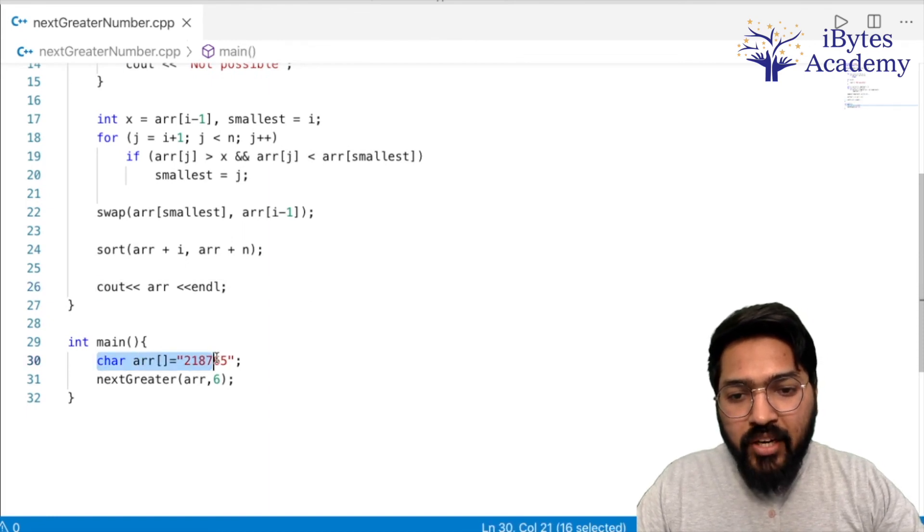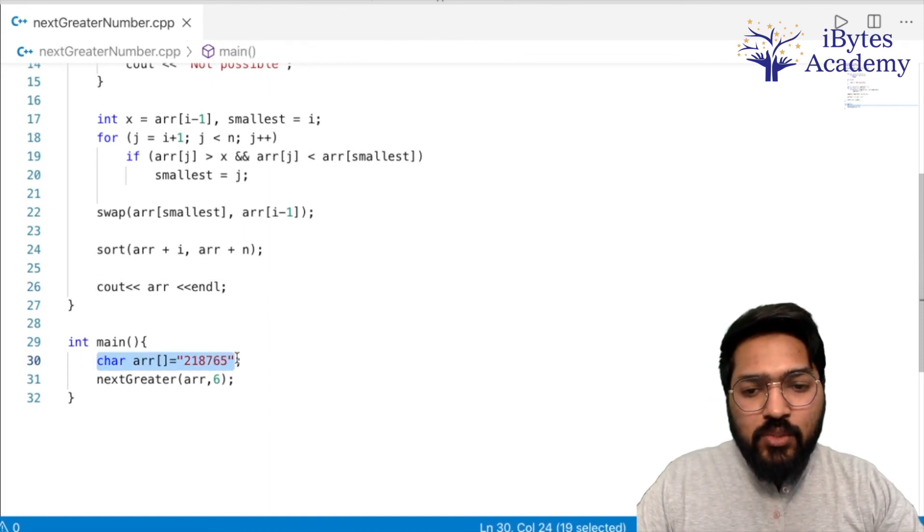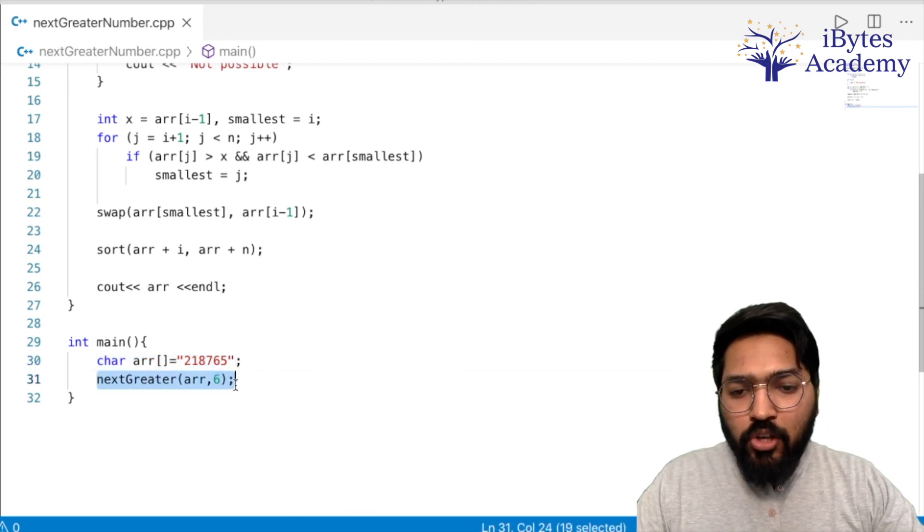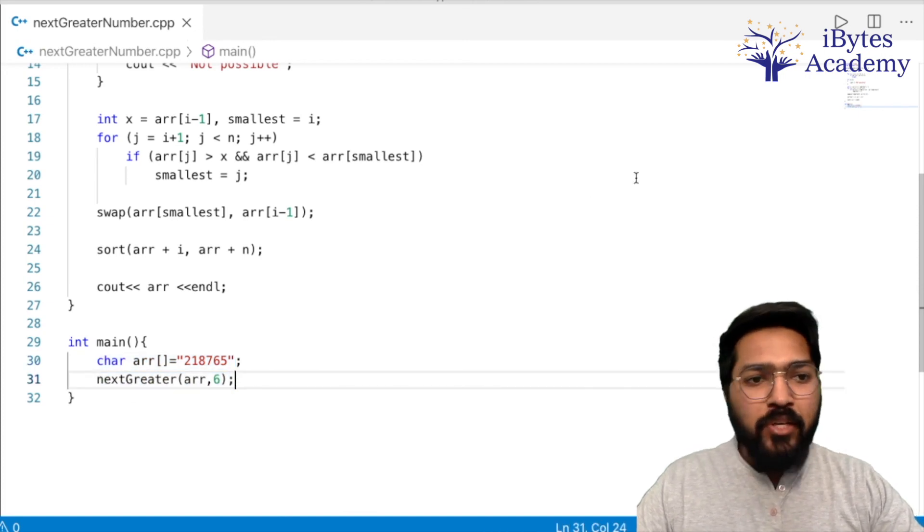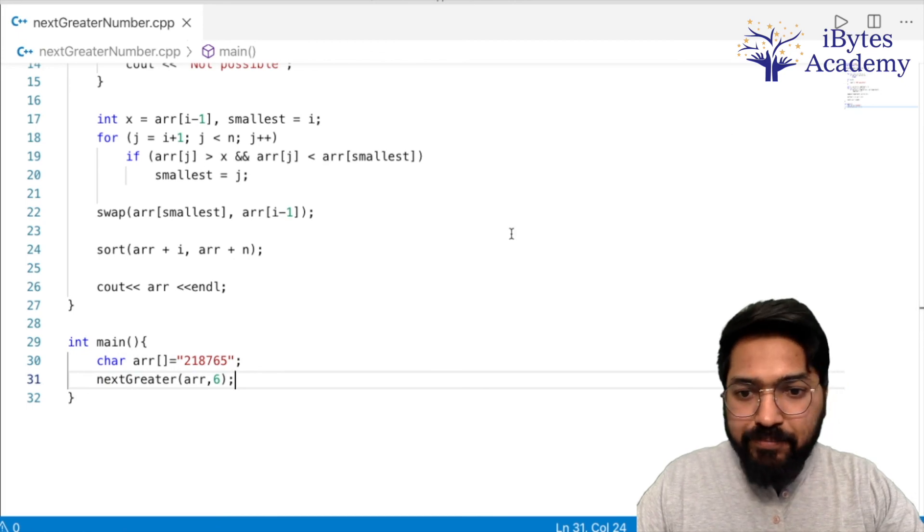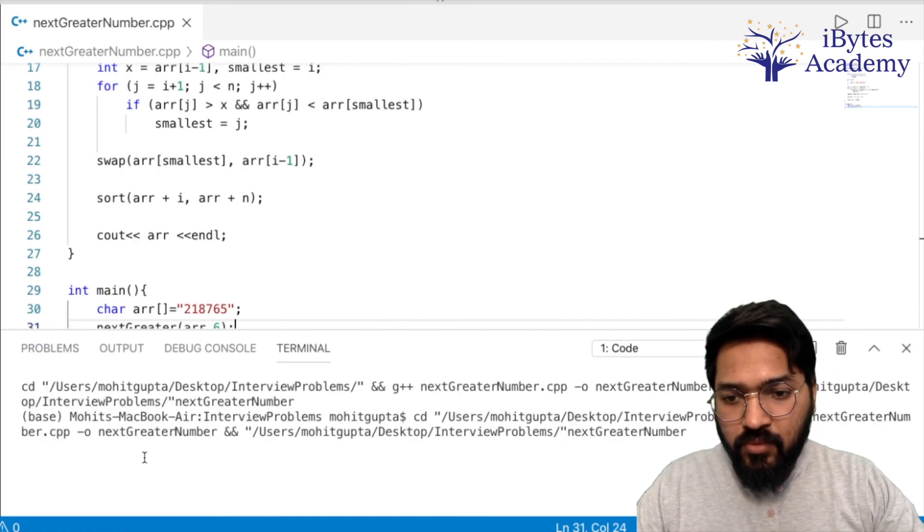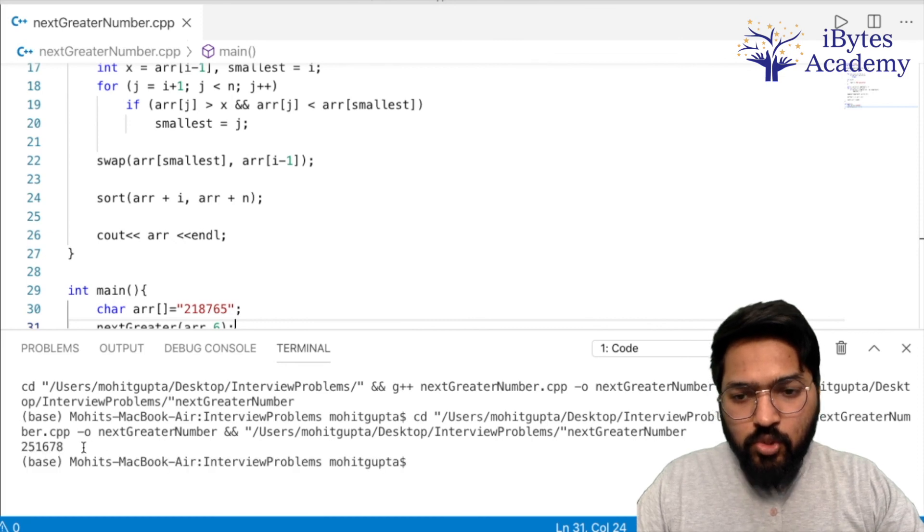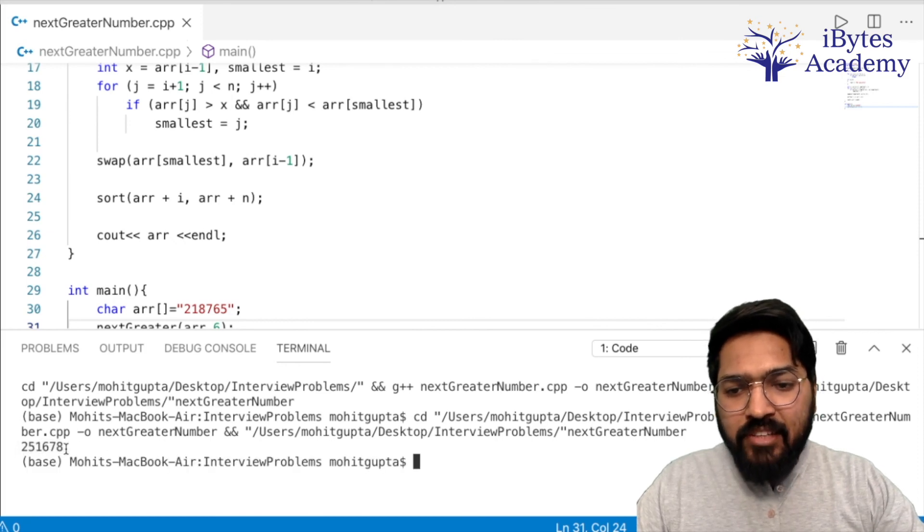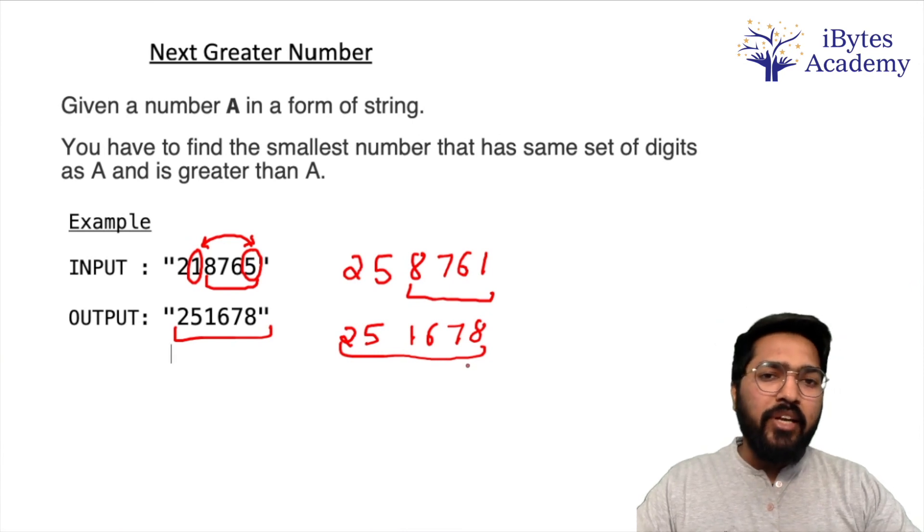And this is our main function. Here we are creating a character array 2 1 8 7 6 5, same input I'm taking, and then we call the function. Our answer should print. So we are getting 2 5 1 6 7 8, which is correct.